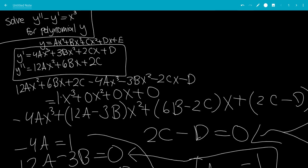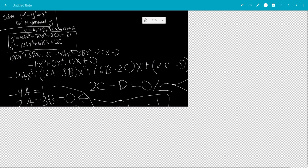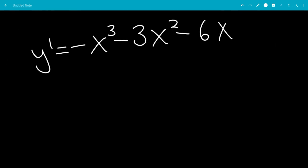C is minus 3. So that would just be minus 6x. And then d is minus 6. So that would just be another minus 6.